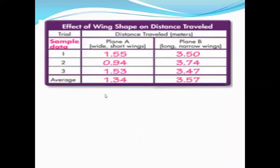So, you have to write this sample data here. Plane A, 1.55, 3.50. Plane A, 0.094, and here the distance is 3.74.